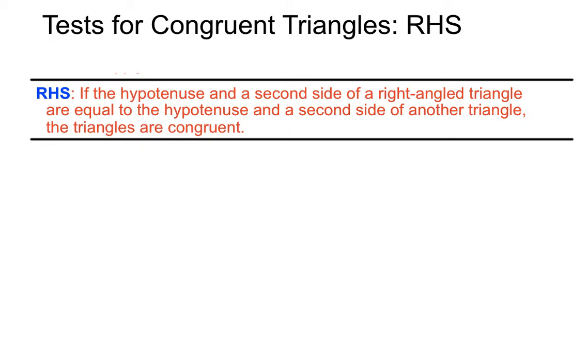Okay, so that's the RHS test. If the hypotenuse and a second side of a right angle triangle are equal to the hypotenuse and a second side of another triangle, the triangles are congruent. All the best with that, and we'll catch you next time.